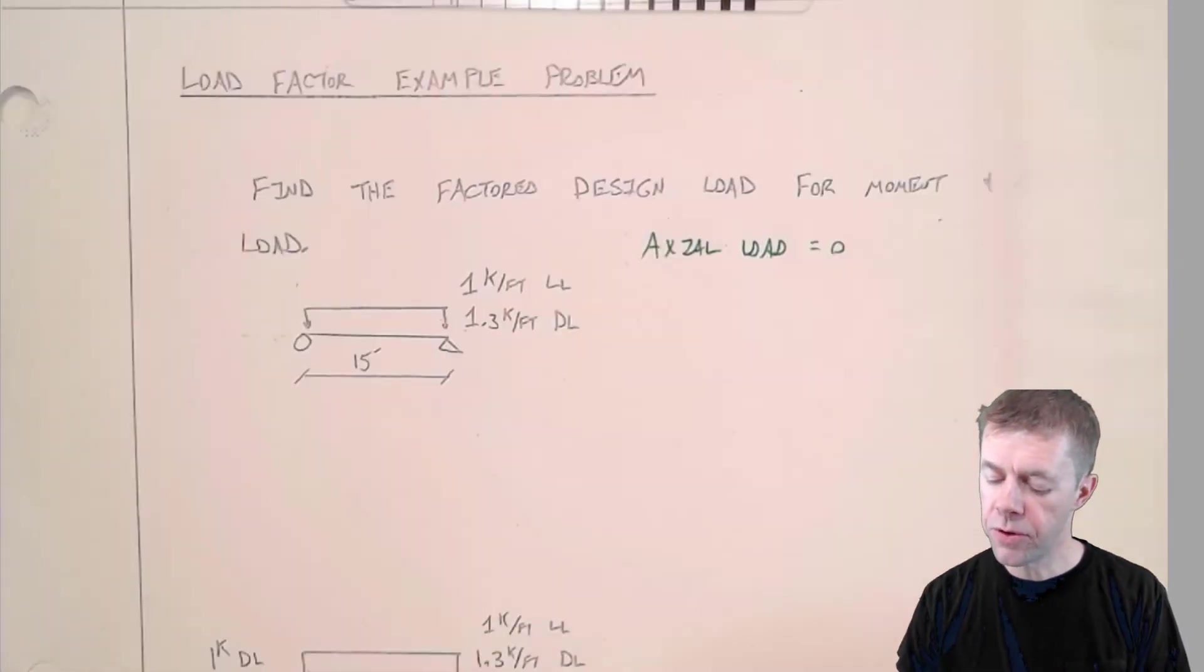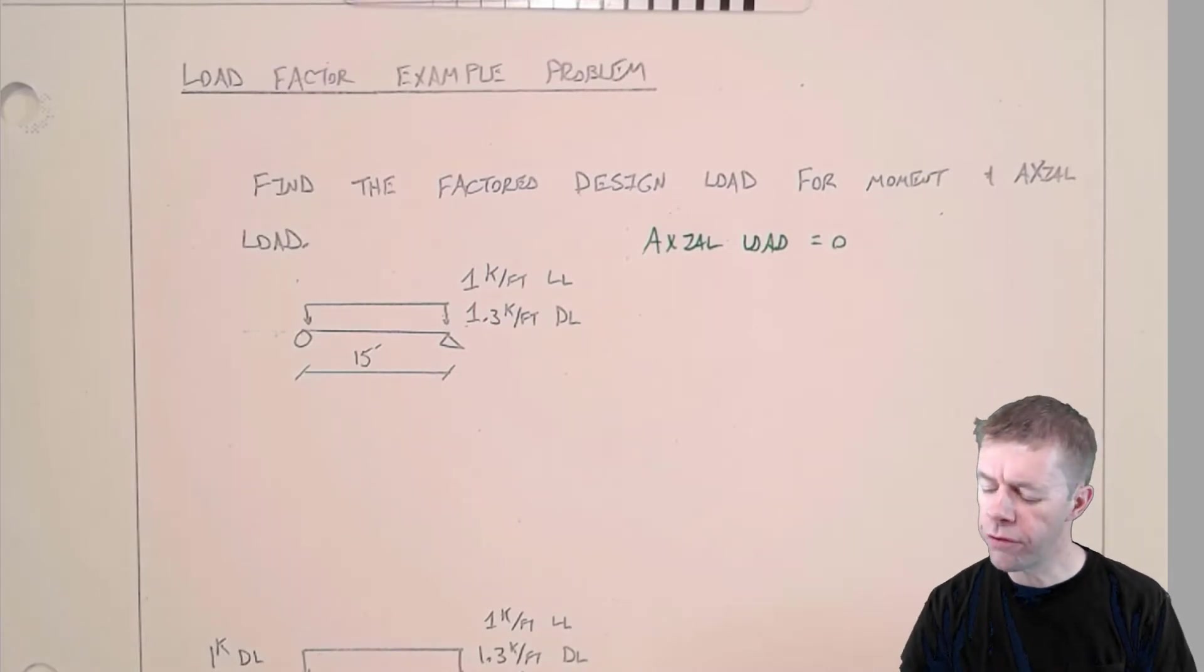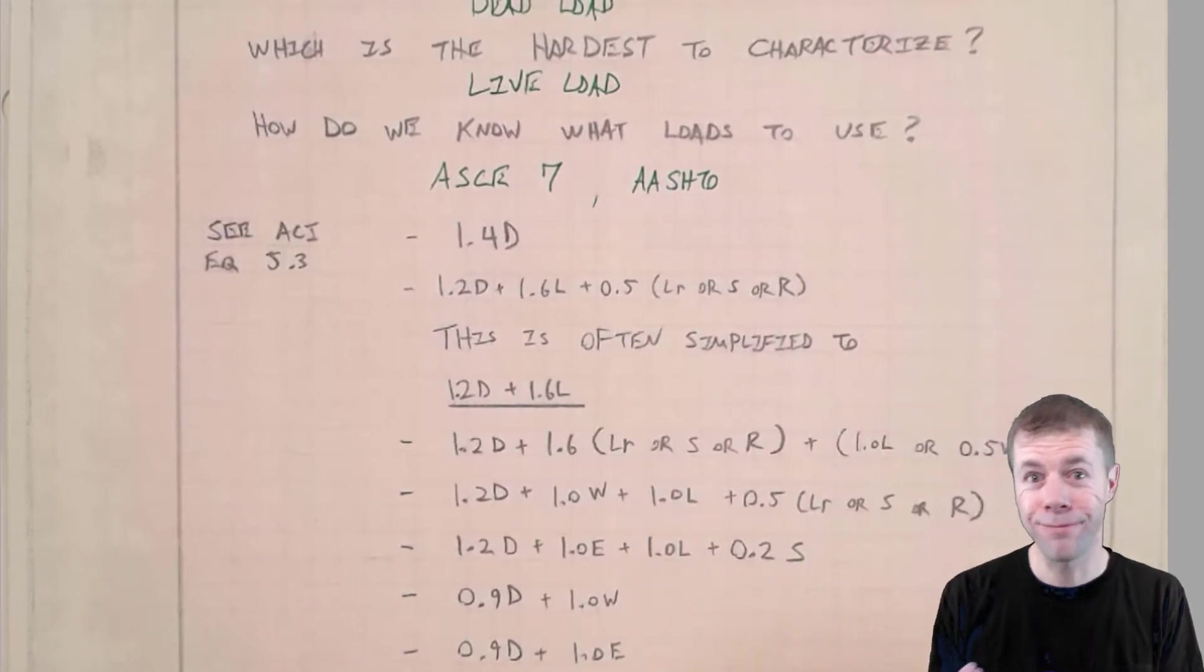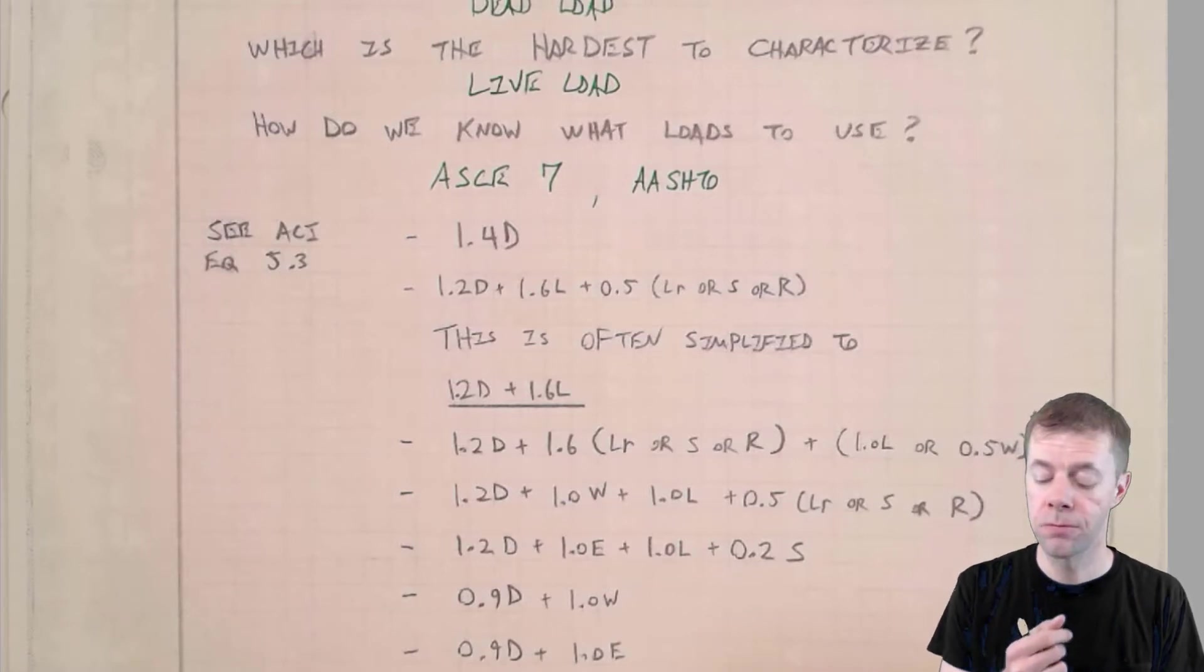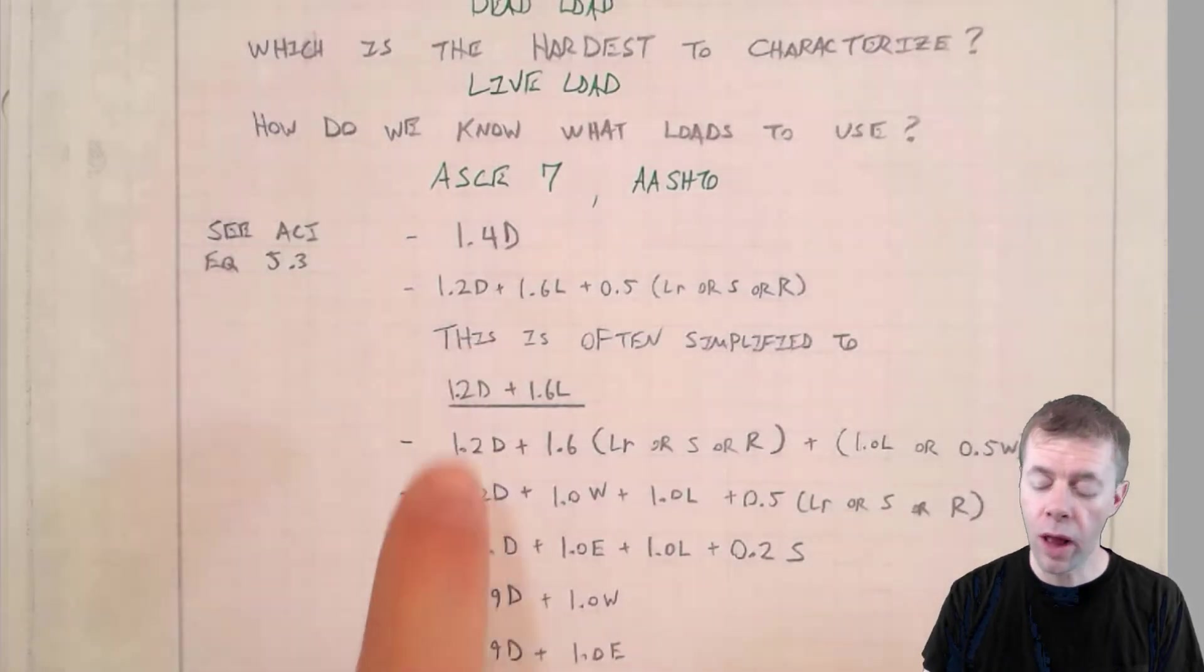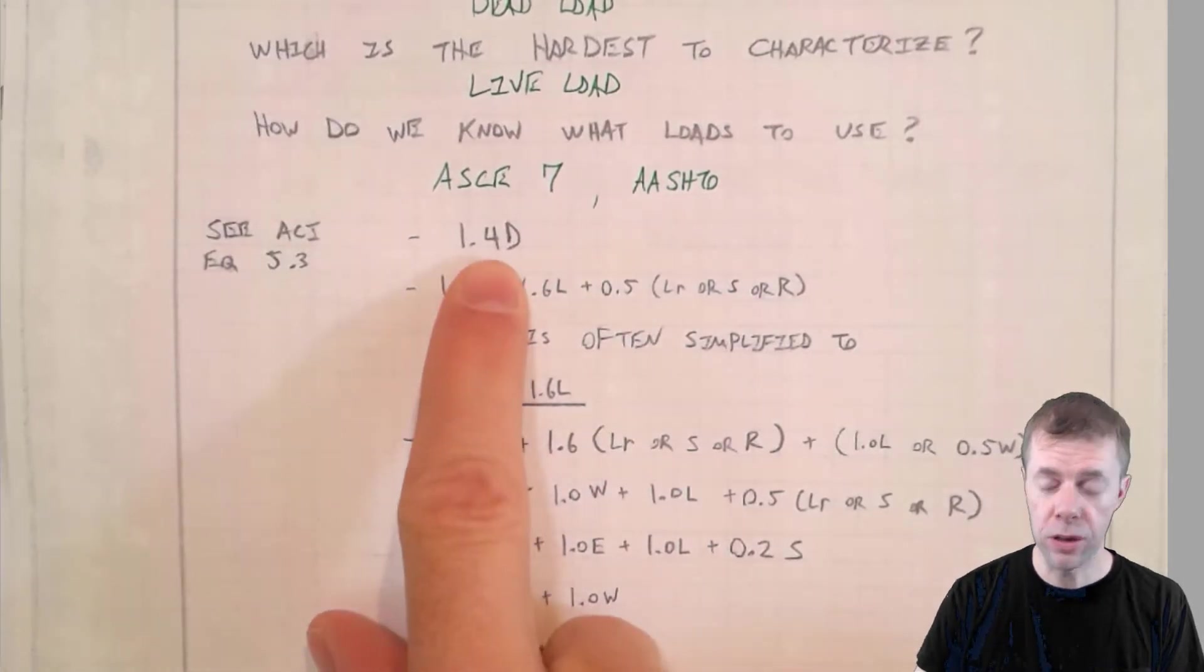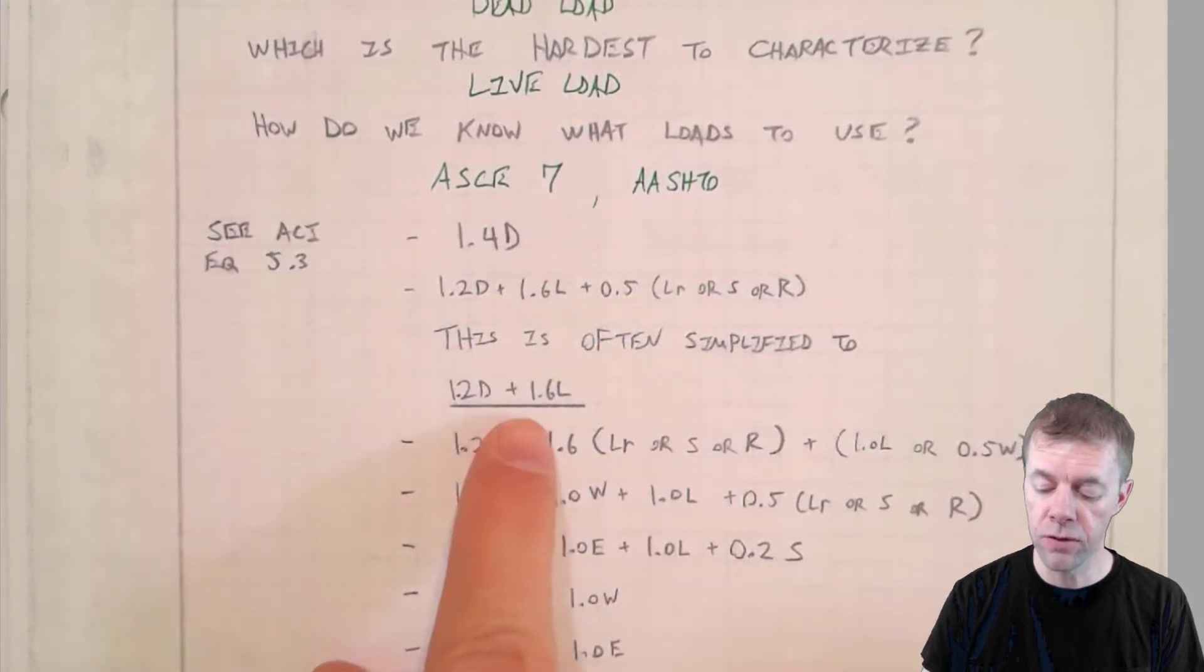We'll start out using the first one, 1.4 times the dead load. Now you might say how do you know which of these load factors to use? When you're starting out and you don't know anything, you don't know, so you've got to try them all. What you'll learn over time is that some of them will be used in certain circumstances and some in others. Most of the time if you have dead load or live load you'll be using either this equation or this equation.